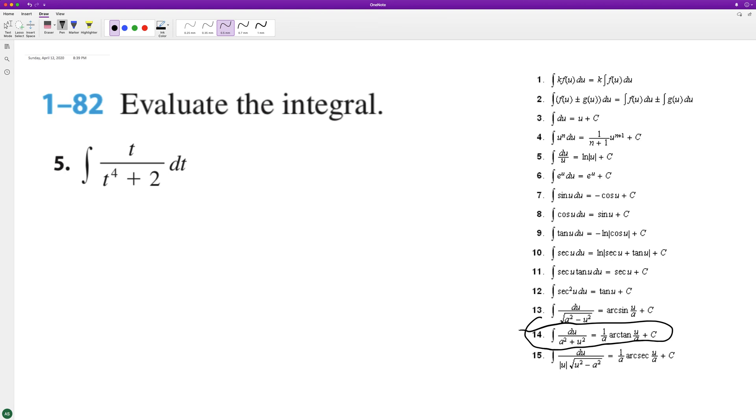But we need to use substitution. So what we're going to do here is we'll set u equal to t squared and du will be equal to 2t. So we've got a t here, but to get du equal to dt, we need to multiply by a half.